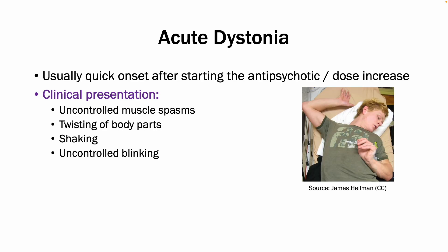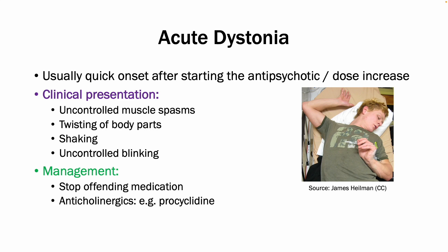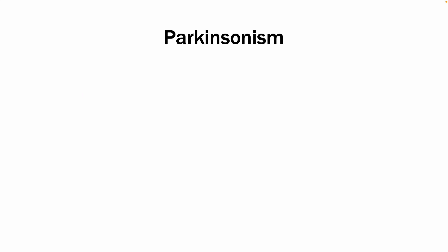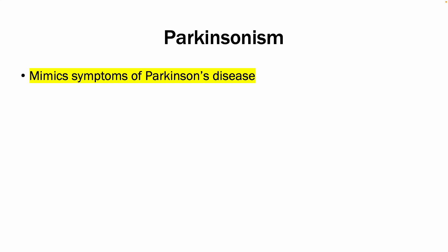Here you have an example of someone experiencing acute dystonia due to medication. The management of acute dystonia involves stopping the offending medication and using anticholinergics such as procyclidine.